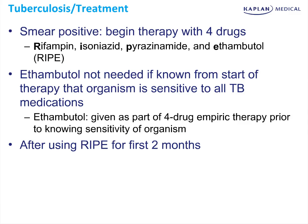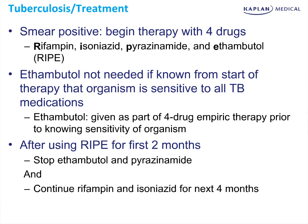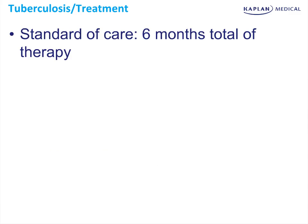After you use RIPE for two months, you can stop the ethambutol and the pyrazinamide. At that point, you continue rifampin and isoniazid for the next four months. The standard of care is to treat tuberculosis for six months of total therapy.